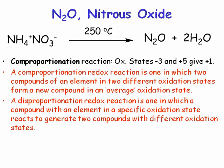A comproportionation reaction is a redox reaction — a reduction-oxidation reaction — where the same element is both the reductant and the oxidant. The opposite of a comproportionation reaction is a disproportionation reaction. If you started with nitrous oxide and went to ammonium nitrate, that would be a disproportionation reaction, because you start with an element in one oxidation state and end up with it in two oxidation states. We'll see real examples of this in chlorine chemistry later in the course.